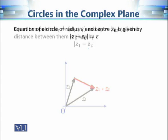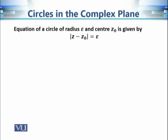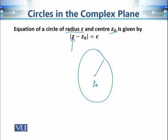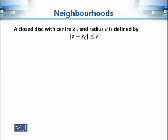Using this distance, we can describe a circle in the complex plane. A circle is the set of all points whose distance from a fixed point z₀ is constant. Taking the constant to be ε, mathematically this becomes: find all complex numbers z such that the distance from z to z₀ equals ε. All such z form a circle with center z₀ and radius ε.